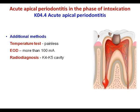Additional methods for the intoxication phase: the temperature test is painless; electroodontodiagnostics shows more than 100 µA due to absence of vital pulp. On X-ray, we may see a K4 or K5 cavity — either a deep carious cavity in the deep layers of dentin, or a carious cavity communicating with the pulp cavity.